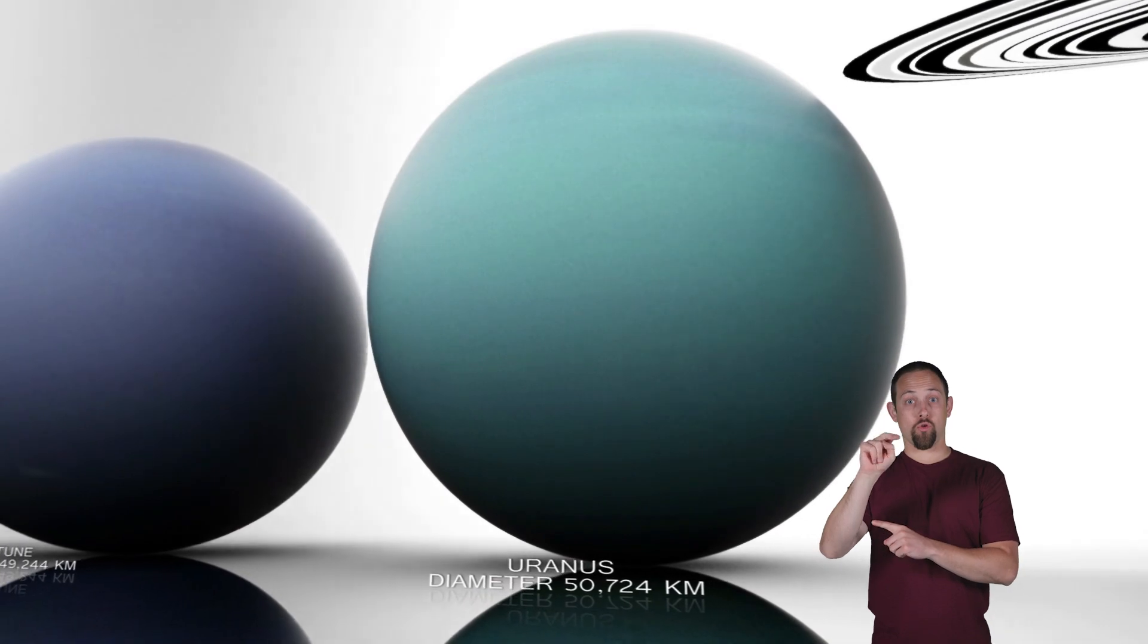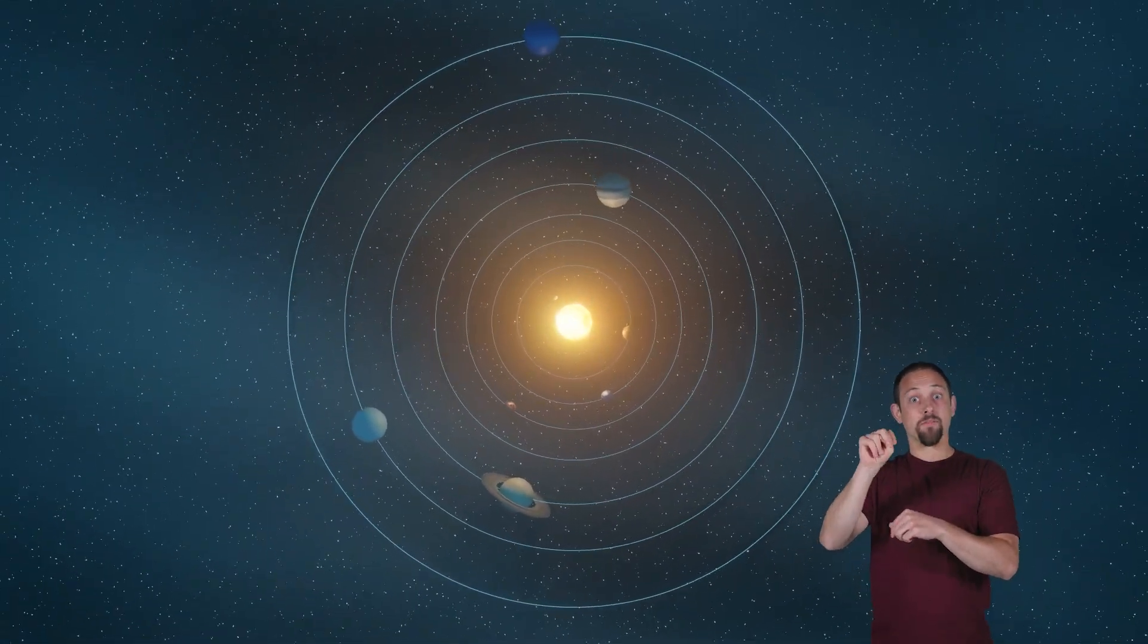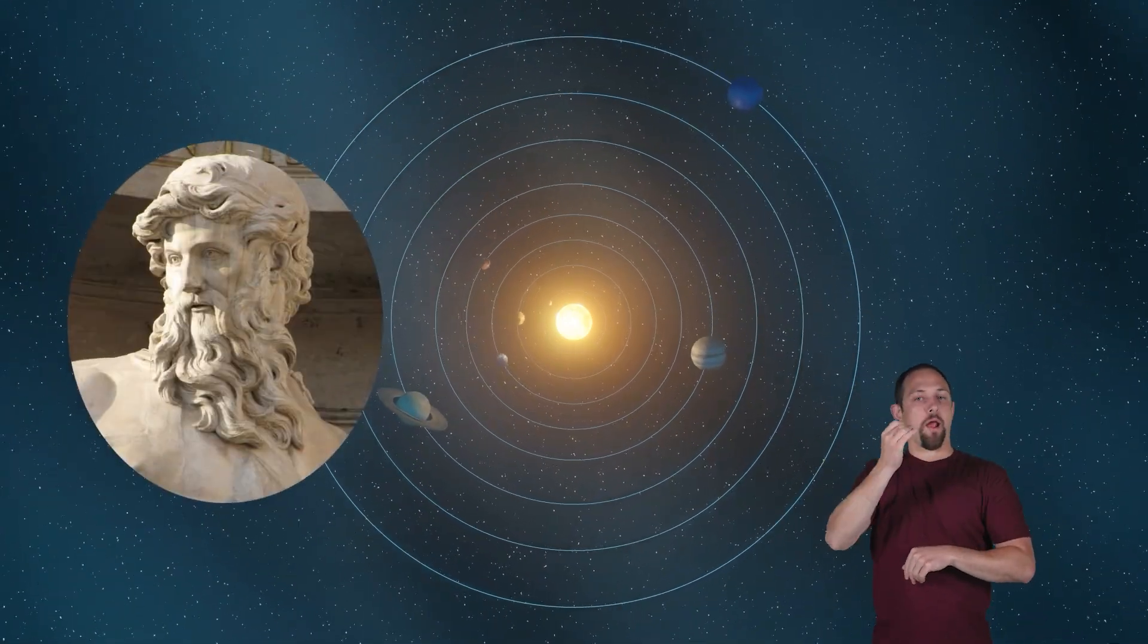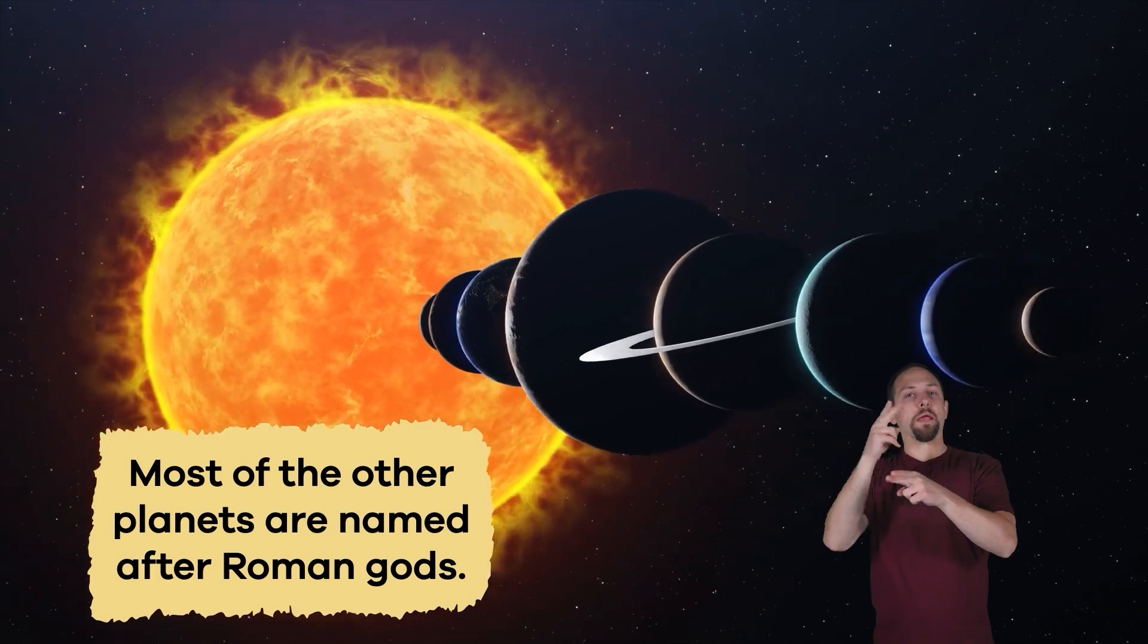Uranus is an especially unique planet. Even the origins of its name make it stand out because it is named after the Greek god of the sky. Most of the other planets are named after Roman gods.